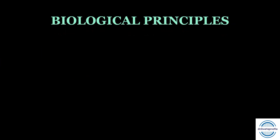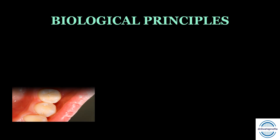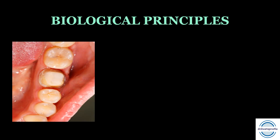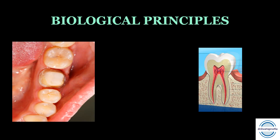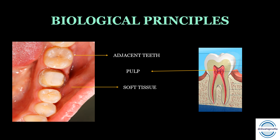When talking about the biological principles, we need to take care of the health of the biological tissues around the prepared tooth. This includes: first, the adjacent teeth which are present; second, the soft tissue surrounding the tooth to be prepared; and third, the pulp of the tooth. If it is a vital tooth, then it becomes very, very important. Let us discuss these things in detail.